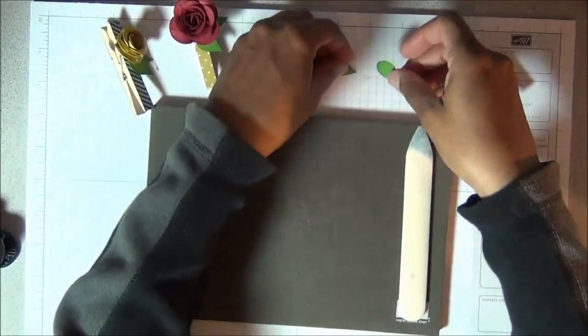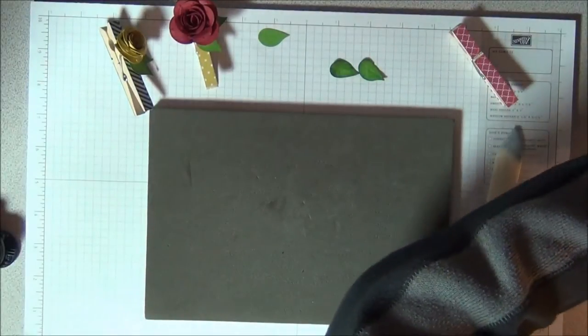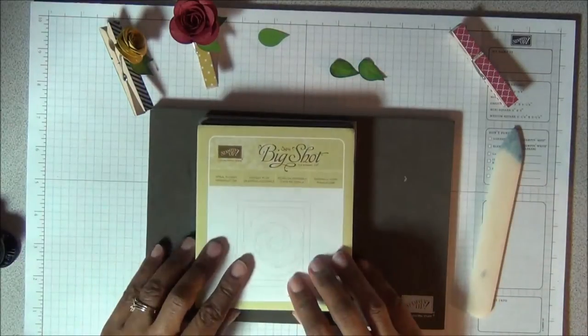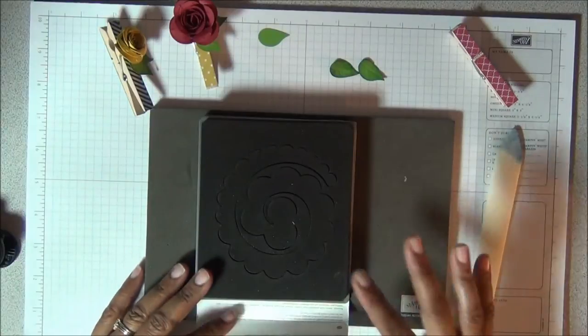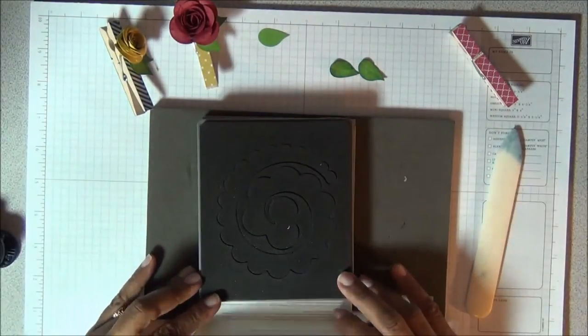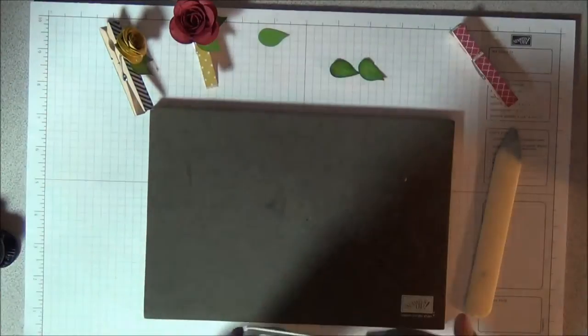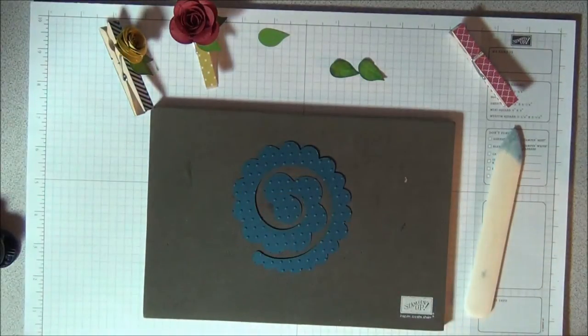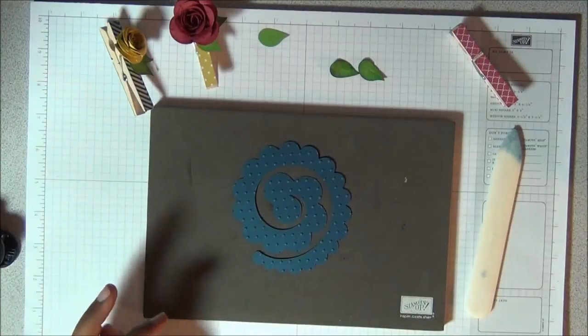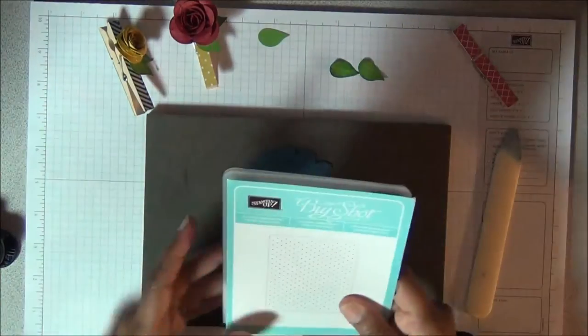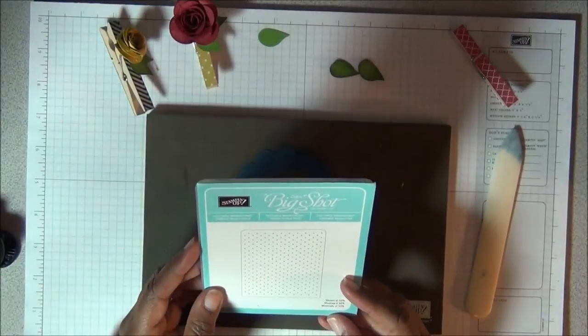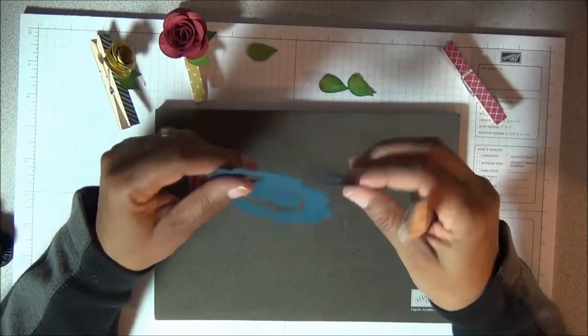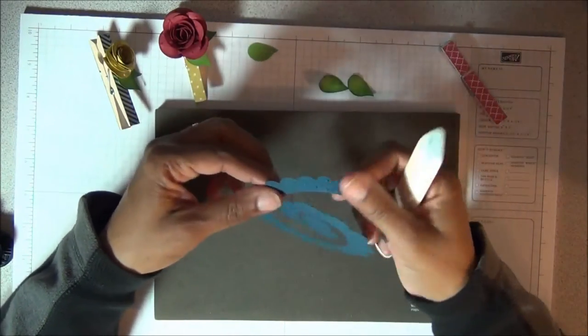Now I will show you our new die. This is our spiral flower originals die. I've already cut my flower out in the Midnight Muse, and I've also run it through my Big Shot using my Perfect Polka Dot textured impressions folder. I want to break down this cardstock a bit and soften it up and also give it some kind of pre-curl so that it's easier when I start rolling it.